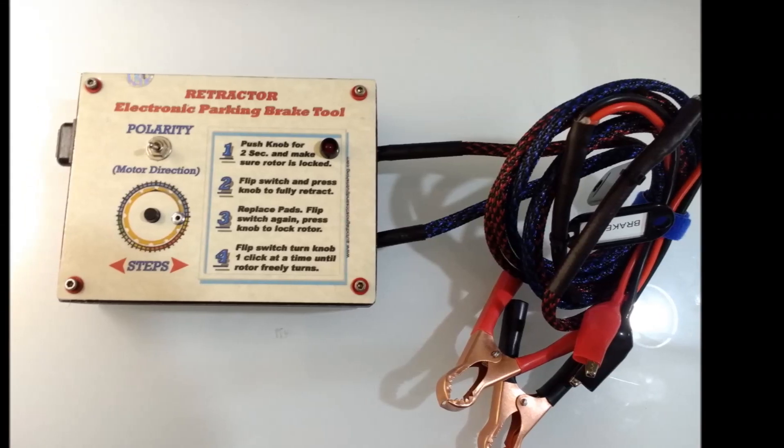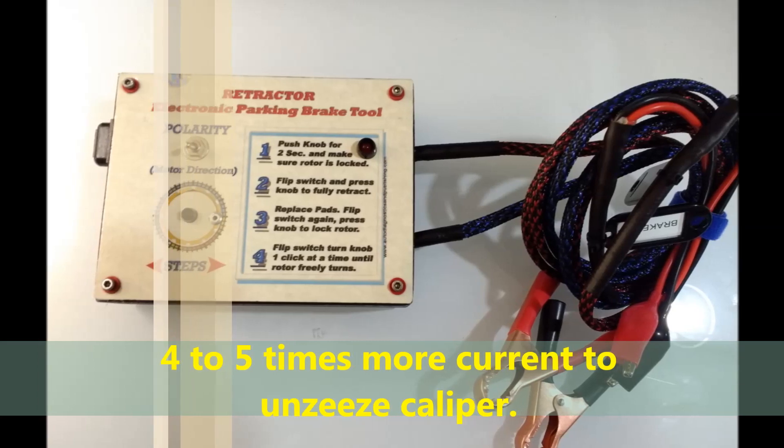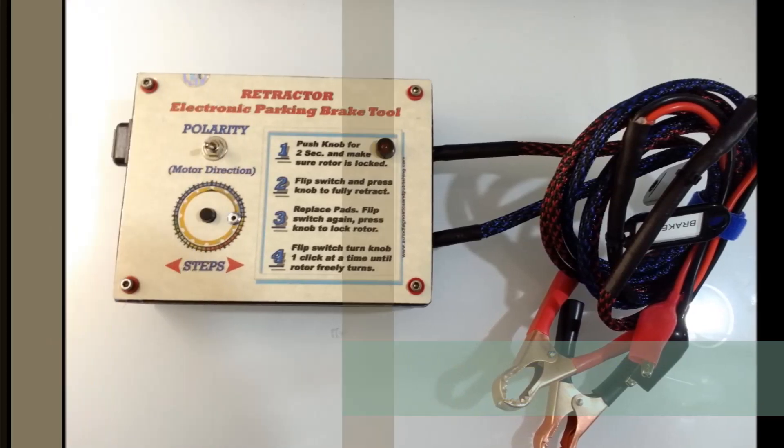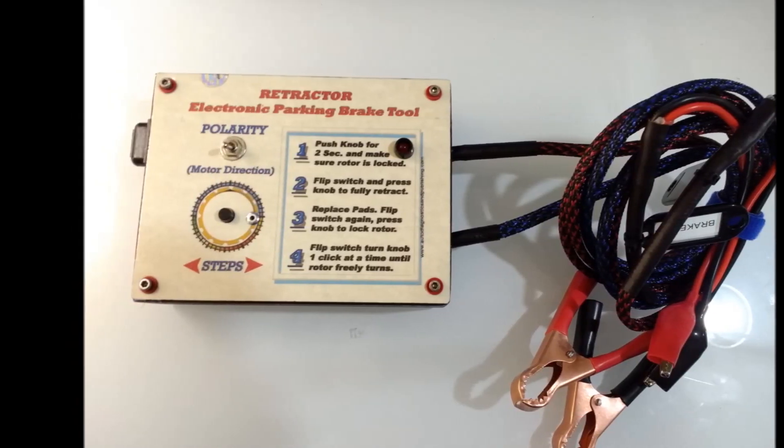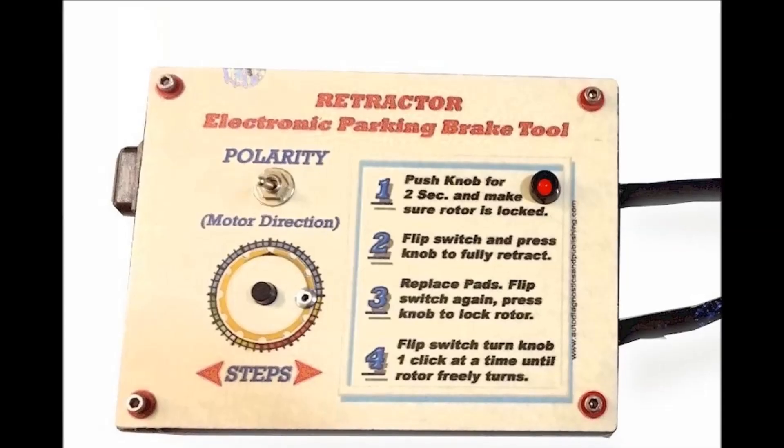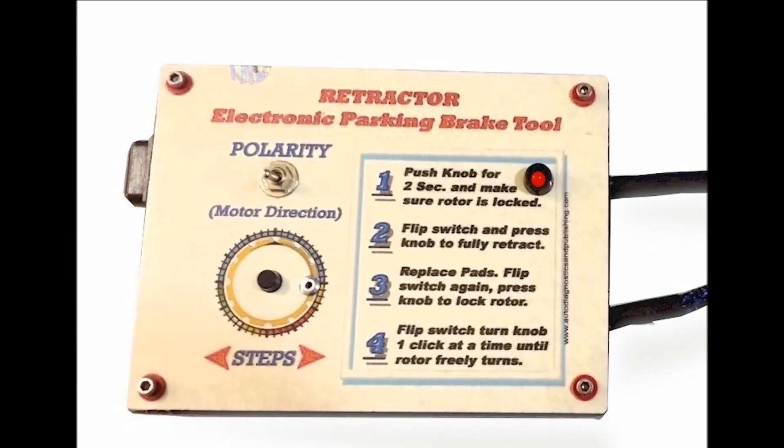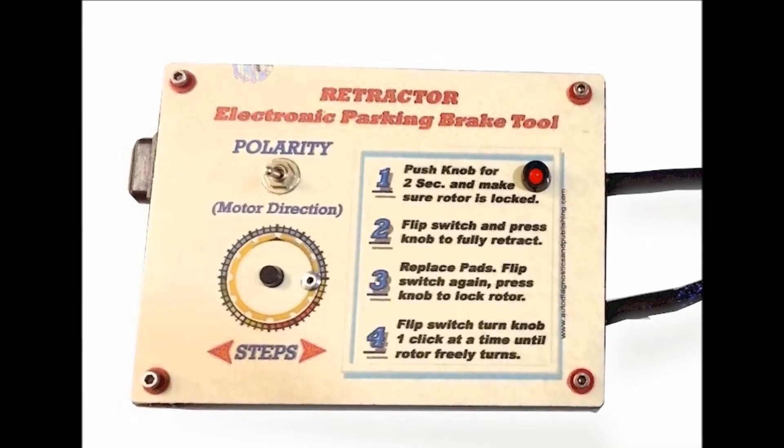It is high current, so it'll give you at least five times more current than the scanner, than the actual ABS module, which is what controls, unless it's a separate module for the electric parking brake. The point is it'll give you a high current output for the motor so that you can drive the motor.